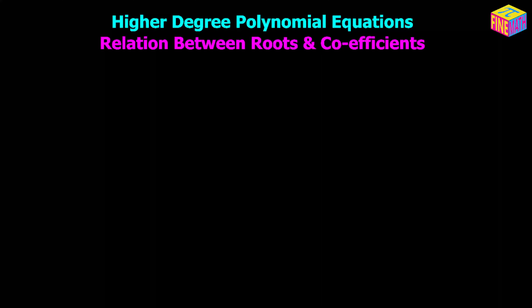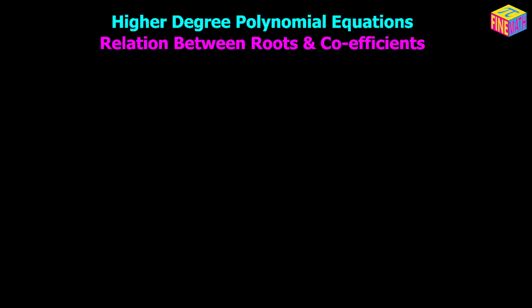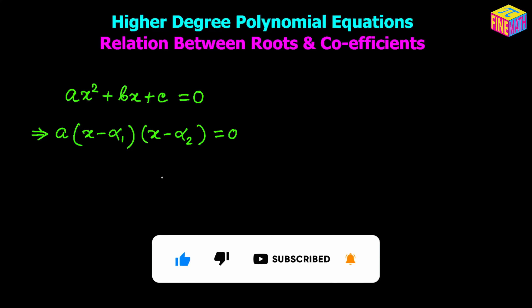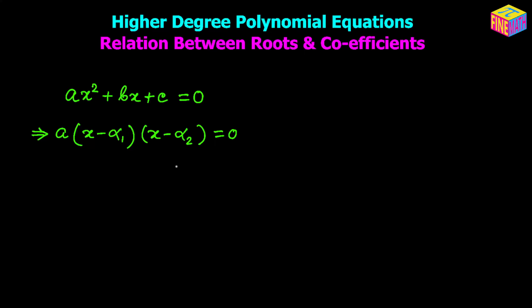First let's begin with a quadratic equation just to quickly revise what we have already learned. I am taking the general form of a quadratic equation. Now if the two roots of this equation are alpha sub 1 and alpha sub 2, then this equation can be written as the leading coefficient a times (x minus alpha sub 1) times (x minus alpha sub 2).